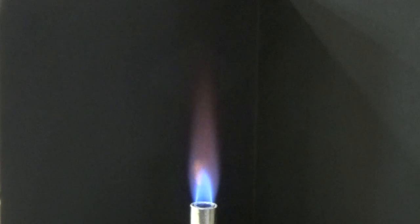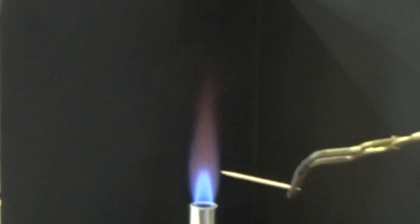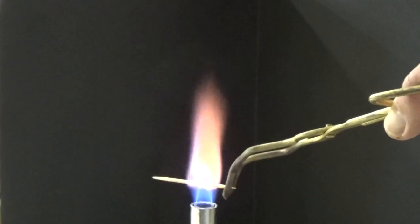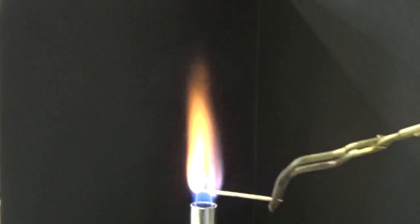Next up we have potassium chloride. That is a light pink, light pink violet color.